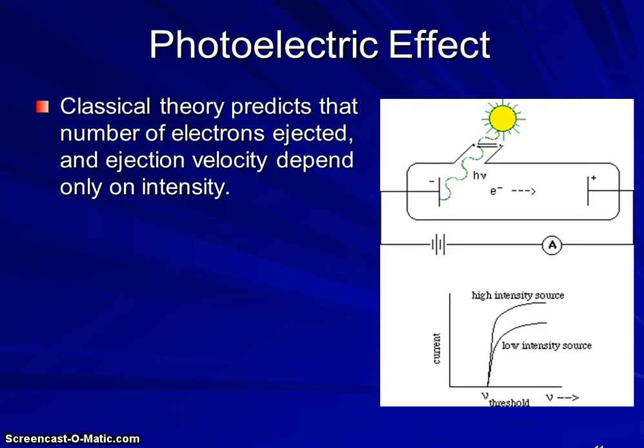Classical theory predicts that for the photoelectric effect, the number of electrons ejected and the ejection velocity will both depend only on the intensity of the light beam. For example, if a non-intense infrared beam ejects no electrons, then the idea is that a very intense infrared beam would eject more or at least some electrons from a surface.